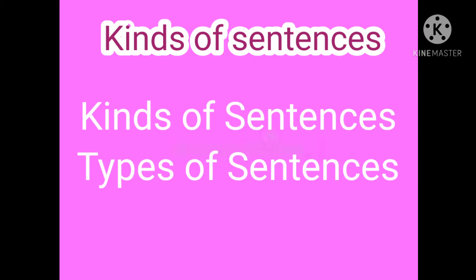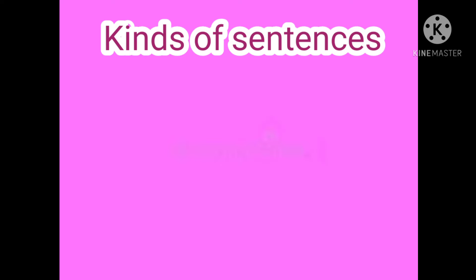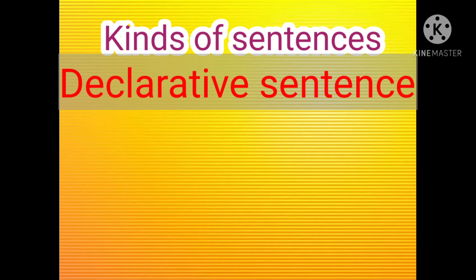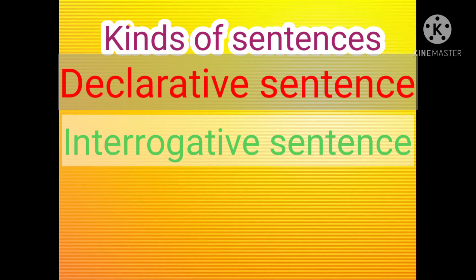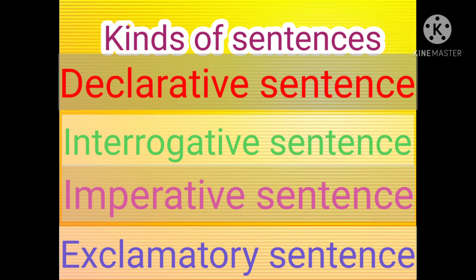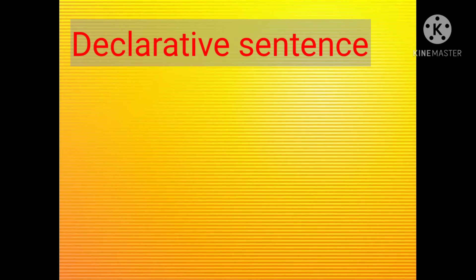First, we shall learn different kinds of sentences. There are four kinds of sentences: declarative sentence, interrogative sentence, imperative sentence, and exclamatory sentence. Now we shall see them one by one with examples.